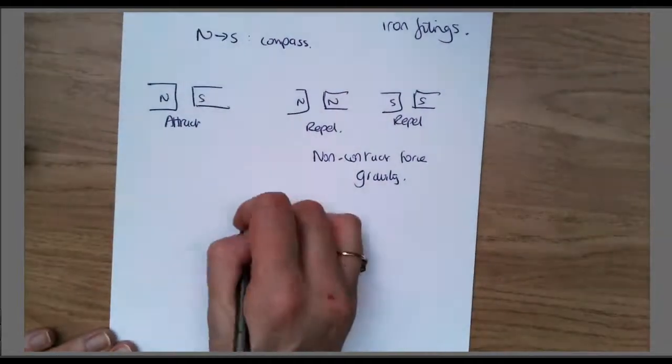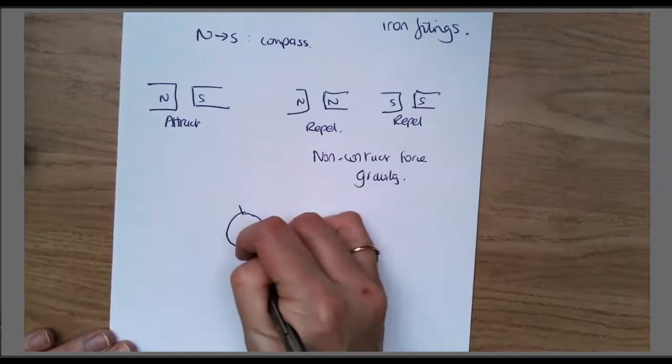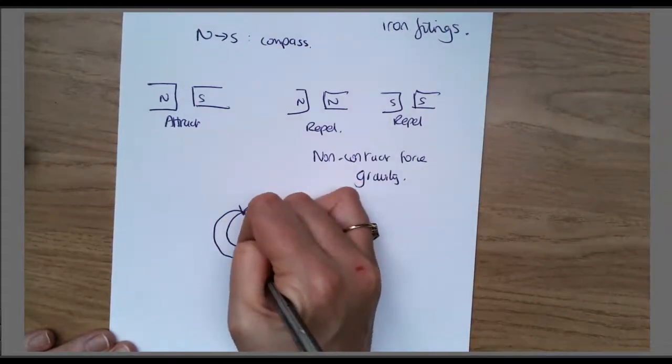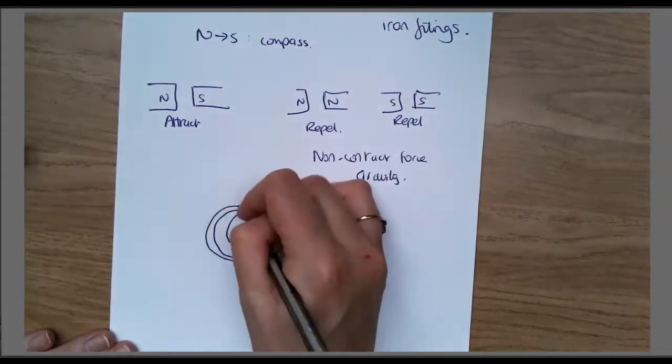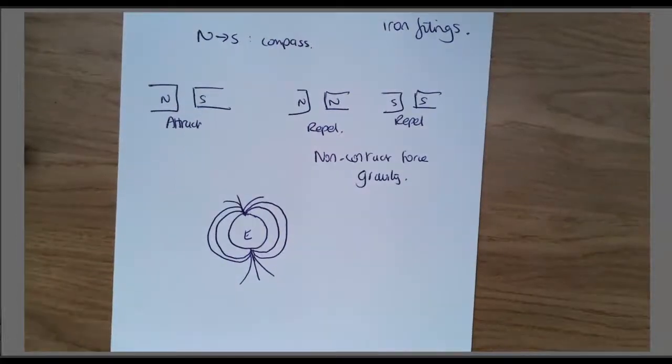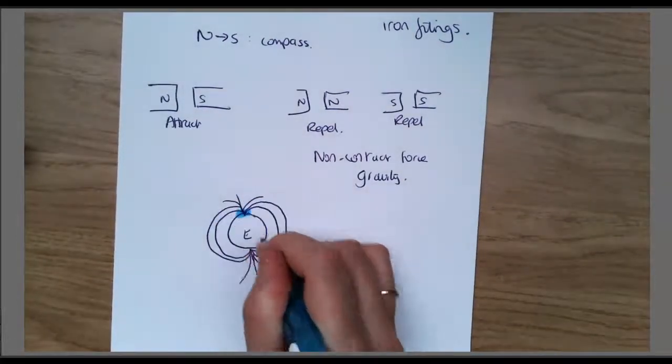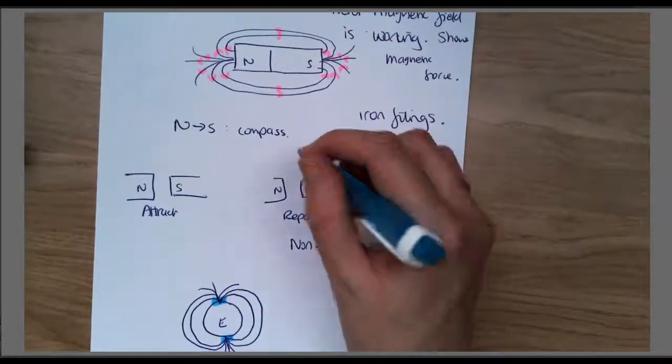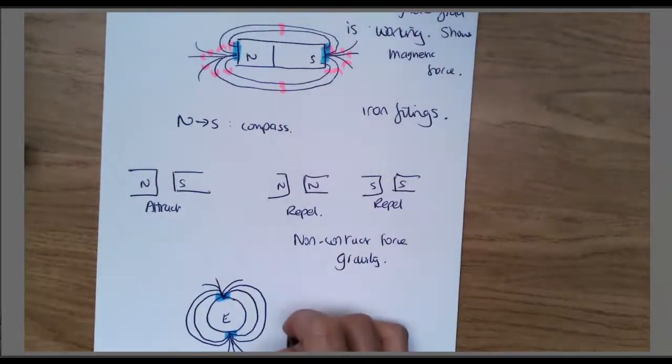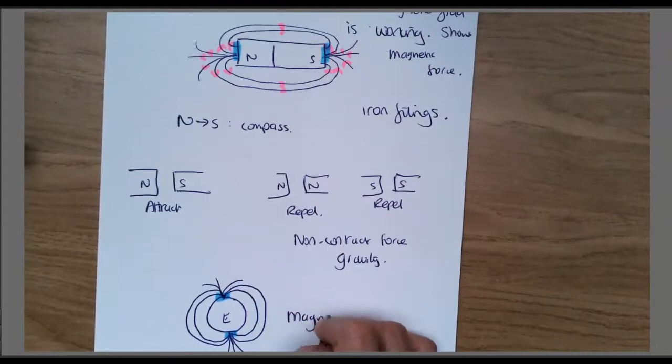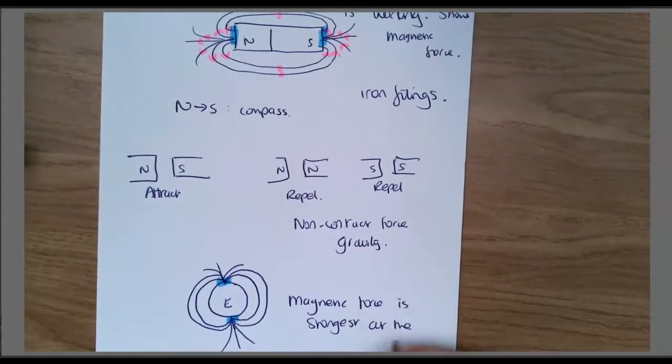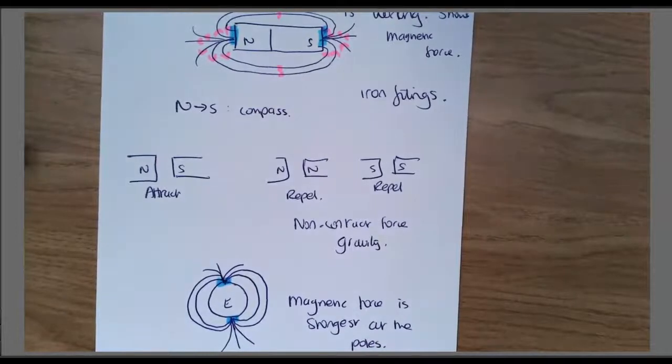Last thing you need to think about for magnets is the magnetic field of the earth. The earth's magnetic field looks like a bar magnet with loops that come out, and it's slightly tilted on its side. At the poles of the earth and at the poles of a bar magnet, where the field lines are closest together, that is the strongest. The magnetic force is strongest at the poles of the magnet.